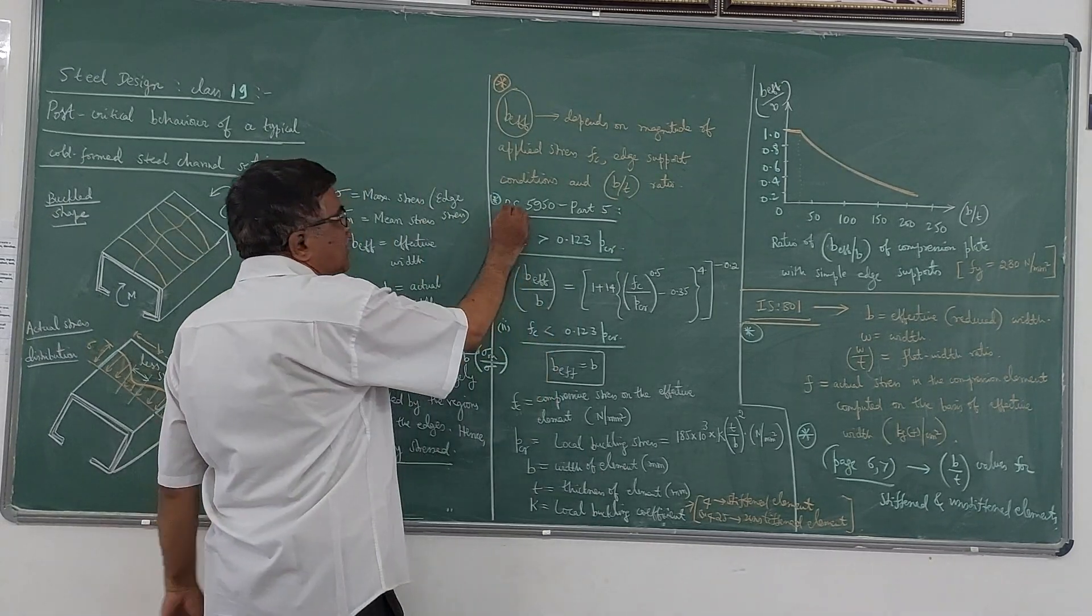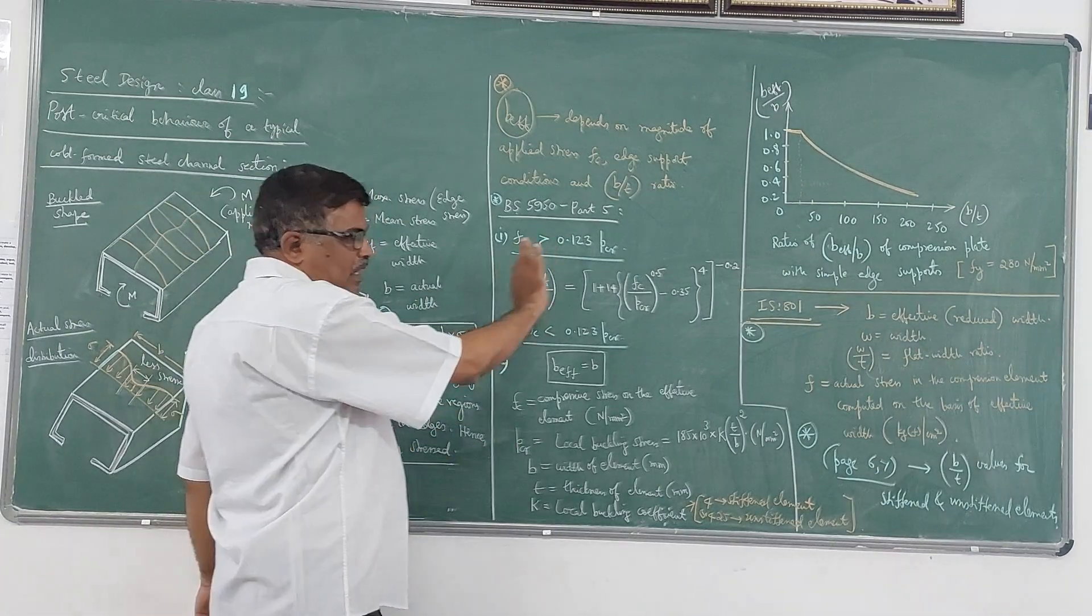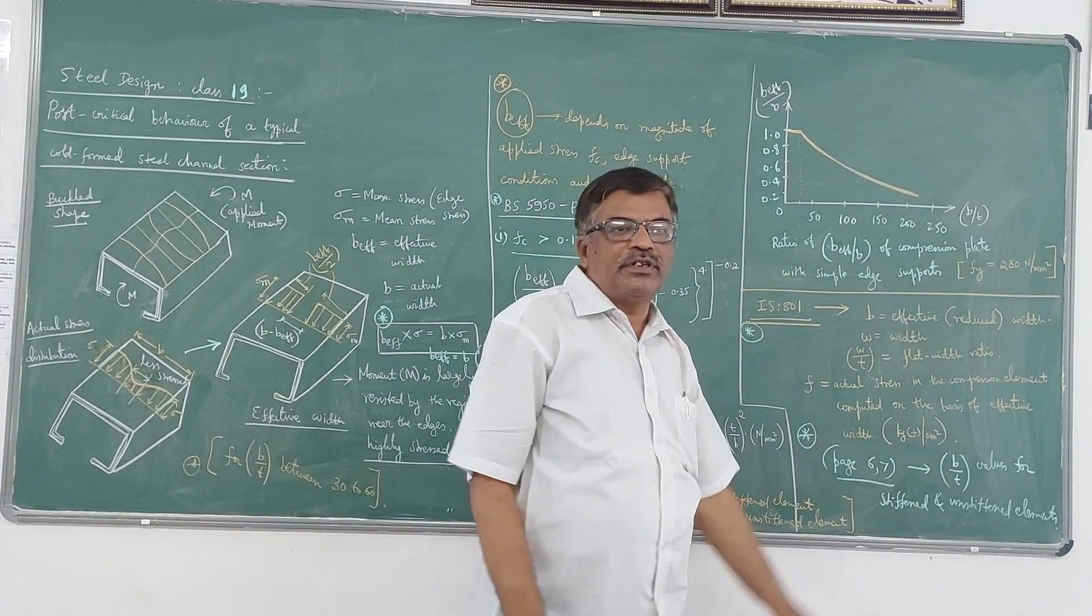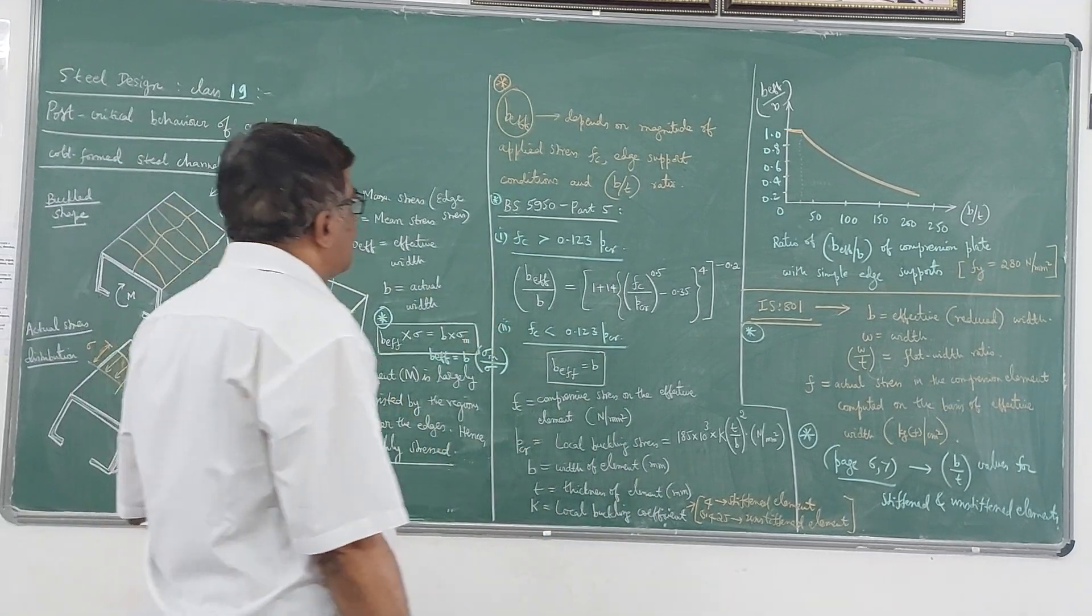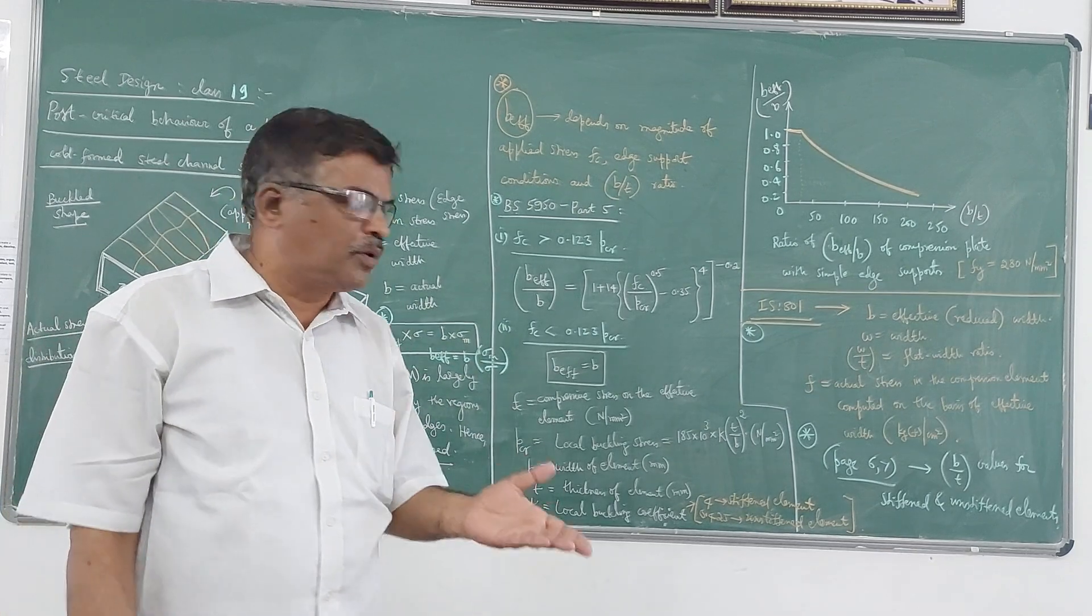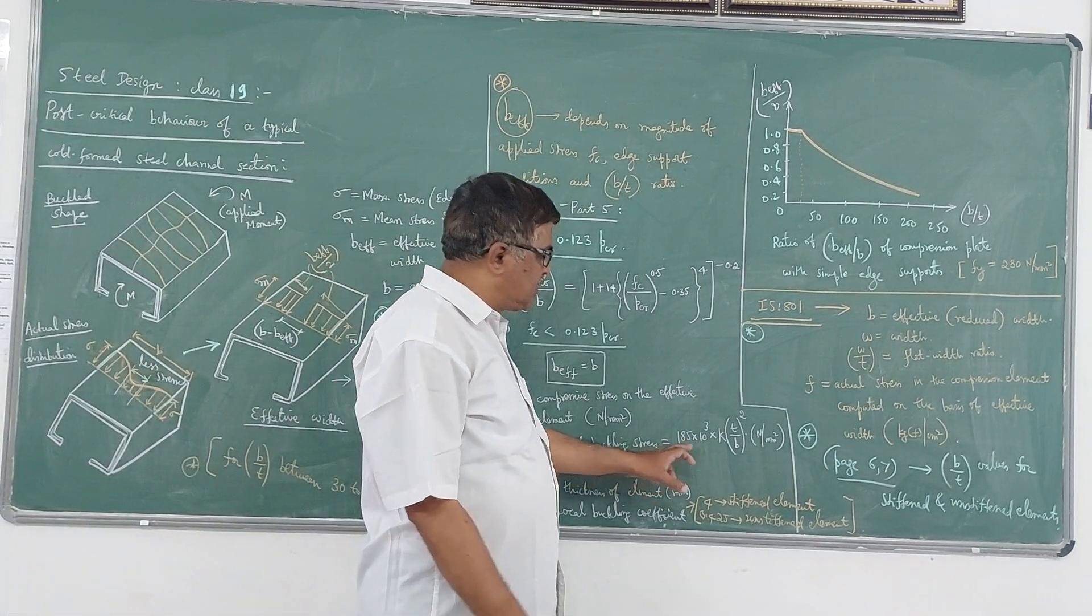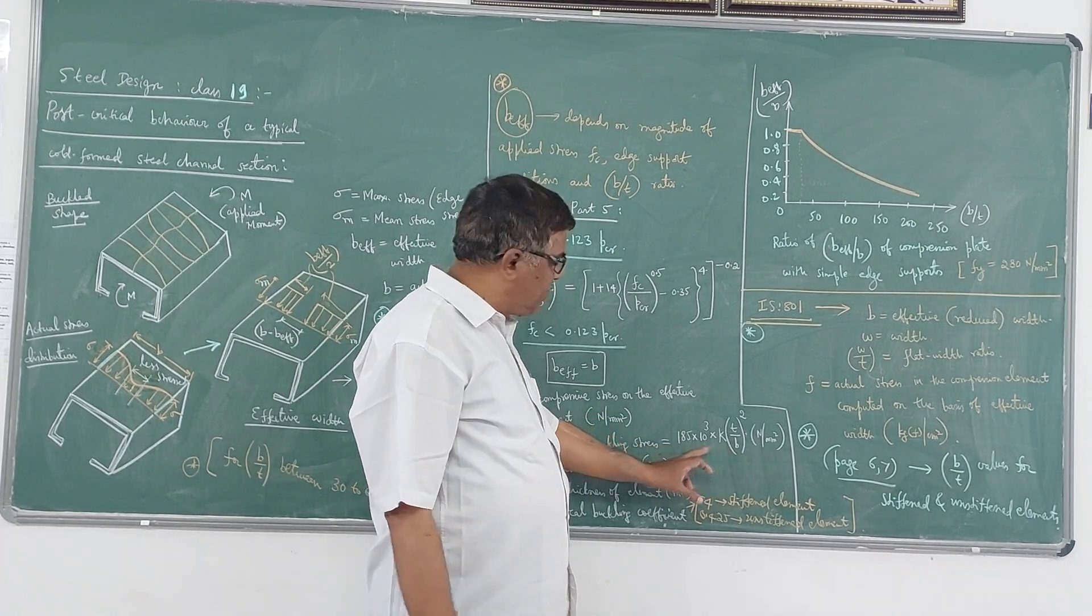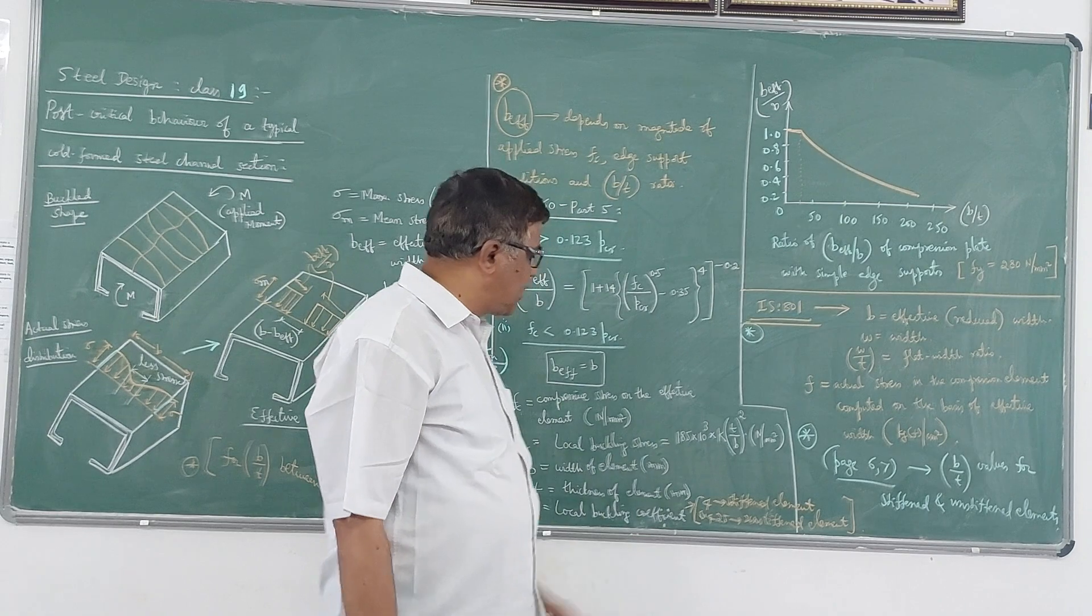So as per the British standard code 5950.5, there is a typical graph which gives the relationship between the Fc and PCR. Of course PCR I have explained in the last video. PCR is nothing but the local buckling stress which is given by this formula.